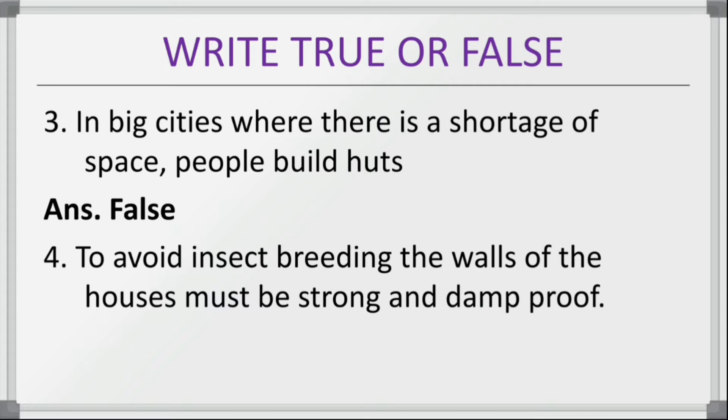To avoid insect breeding, the walls of the houses must be strong and damp — is it true? Yes, it is true.